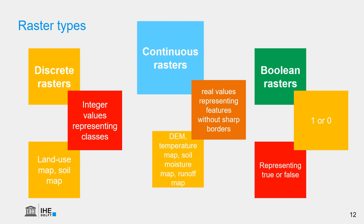The same can be done for research where we want urban versus non-urban, or polluted versus non-polluted. In those cases, we use boolean rasters, and they are very useful for logical operators and to do map algebra, which will be presented in another video.